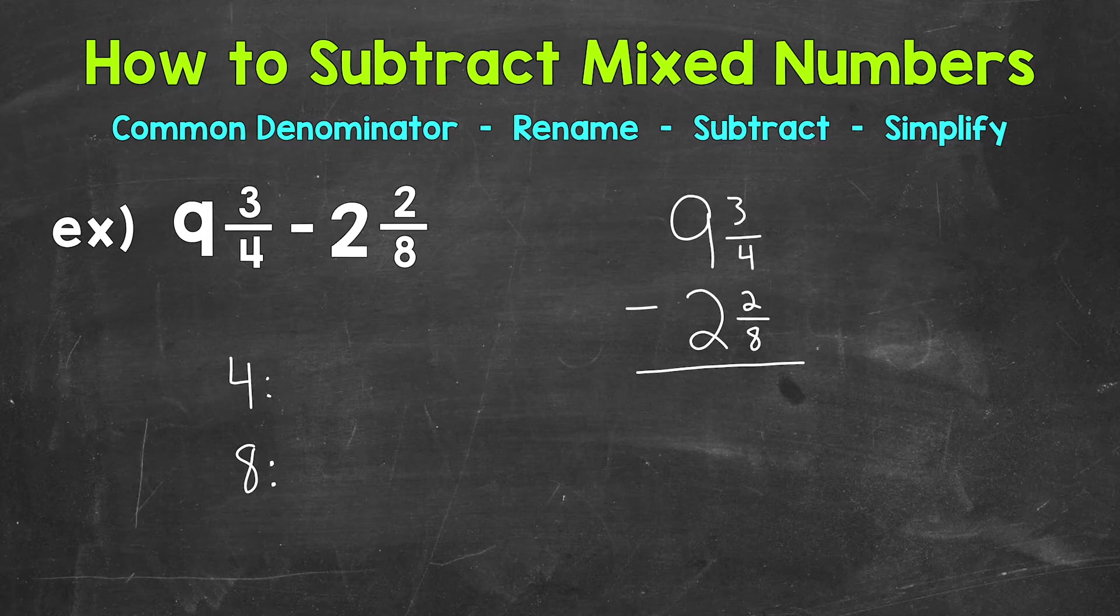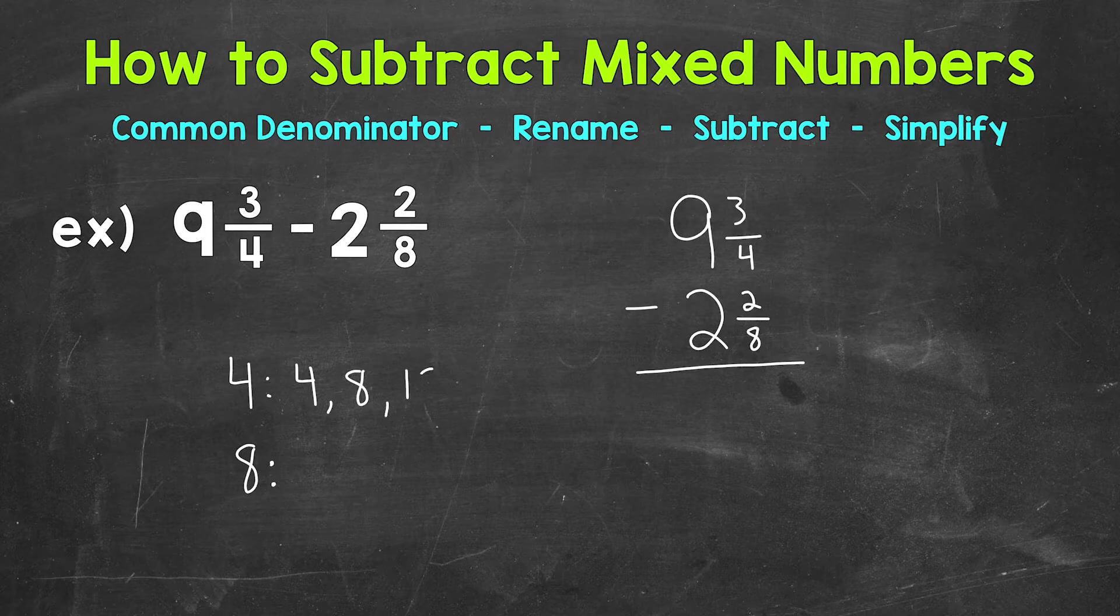So the multiples of 4, well, let's count up by 4: 4, 8, 12, 16. Now those multiples go on forever. So my suggestion, write out 4 or 5, see if you have any in common. If not, you can always extend your lists.